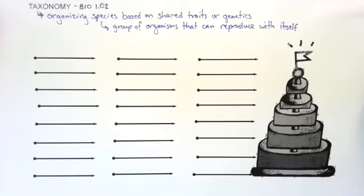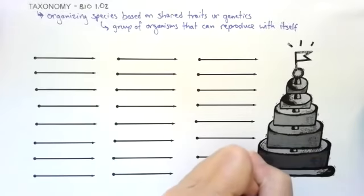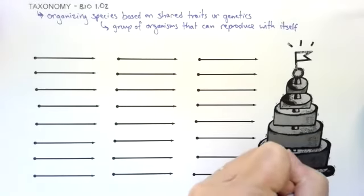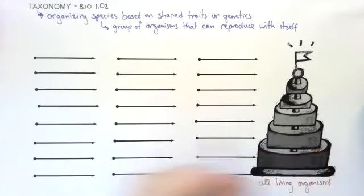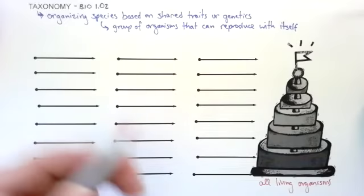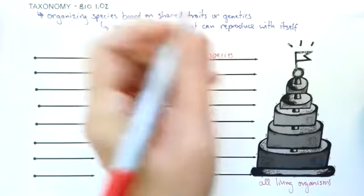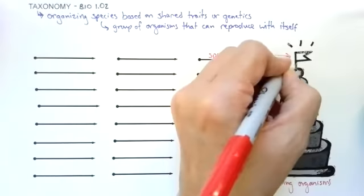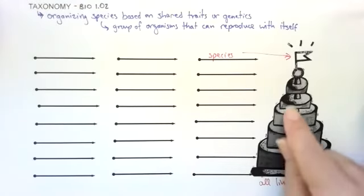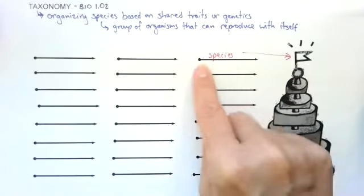This goes all the way down to bacteria. With millions of species in the world, we have to have some way to organize them. That's what my cake here represents. This bottom layer is going to be all the living organisms, down to one single species represented by my flag here.